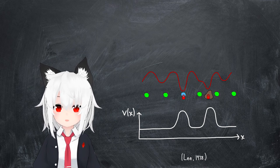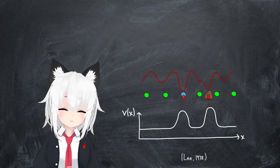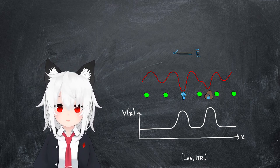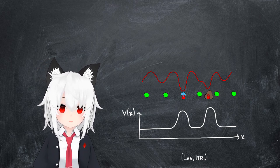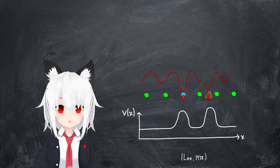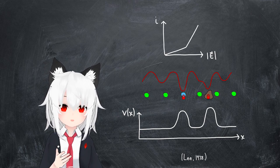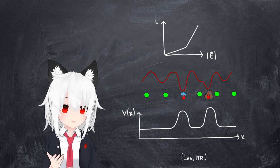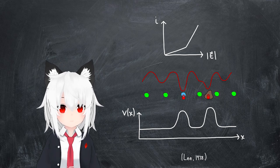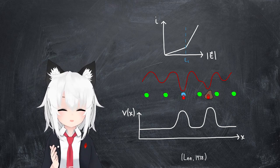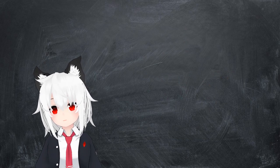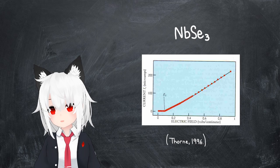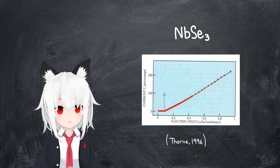However, this pinning can be overcome by applying a large enough in-plane electric field in order to rip the charge density wave off the impurity sites. If this is true, then this can show up as a non-linearity in the current versus electric field characteristics, since they should define a critical electric field over which the current suddenly begins to rise. And this is again exactly what was observed in niobium triselenide.